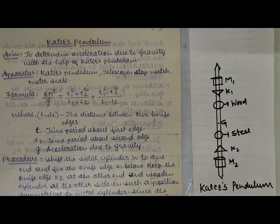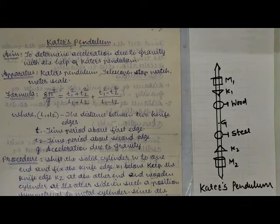Acceleration due to gravity can be found by using pendulums — either a simple pendulum or some other pendulum. One of them we have to use in this practical, and that pendulum is known as Kater's pendulum.